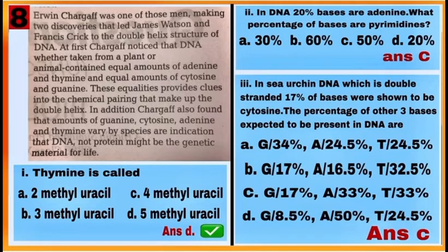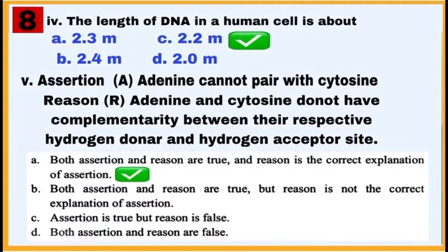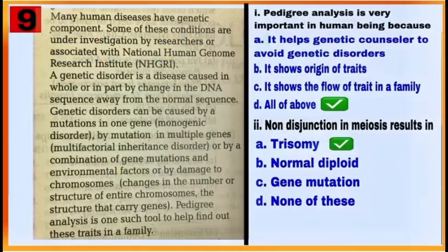Case 8 provides information about the amounts of adenine, thymine, guanine, and cytosine in DNA as observed by Erwin Chargaff. Answer questions 1, 2, 4, and 5.